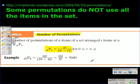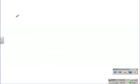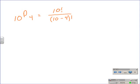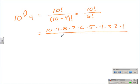I'm going to show you how to find the number of permutations of ten things, chose four at a time by hand without a calculator. By definition, that gives us 10 factorial over the quantity 10 minus 4 factorial. When we simplify, that gives us 10 factorial over 6 factorial. When we expand 10 factorial and 6 factorial out, that gives us 10 times 9 times 8 times 7 times 6 times 5 times 4 times 3 times 2 times 1 in the numerator, and 6 times 5 times 4 times 3 times 2 times 1 in the denominator.